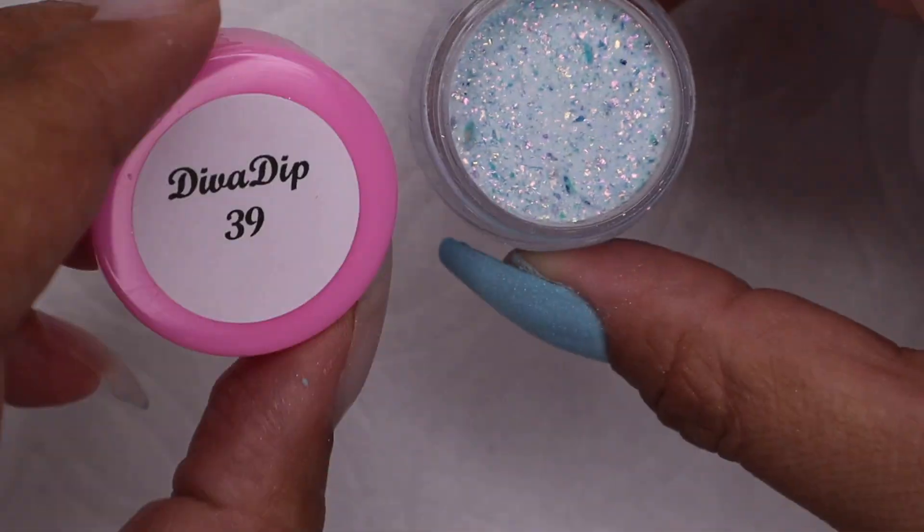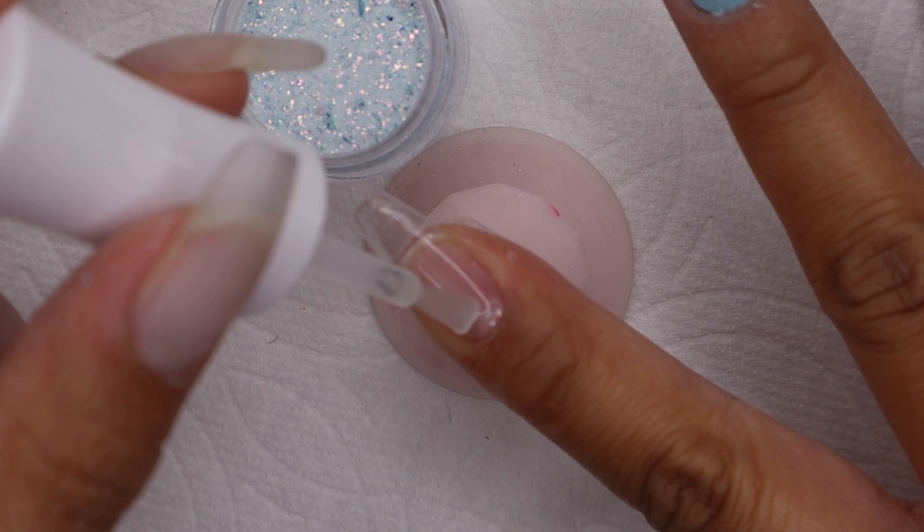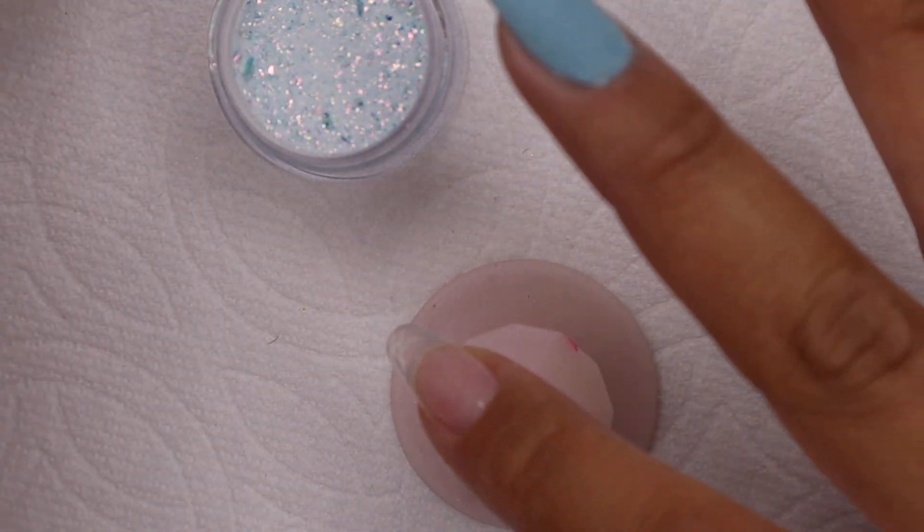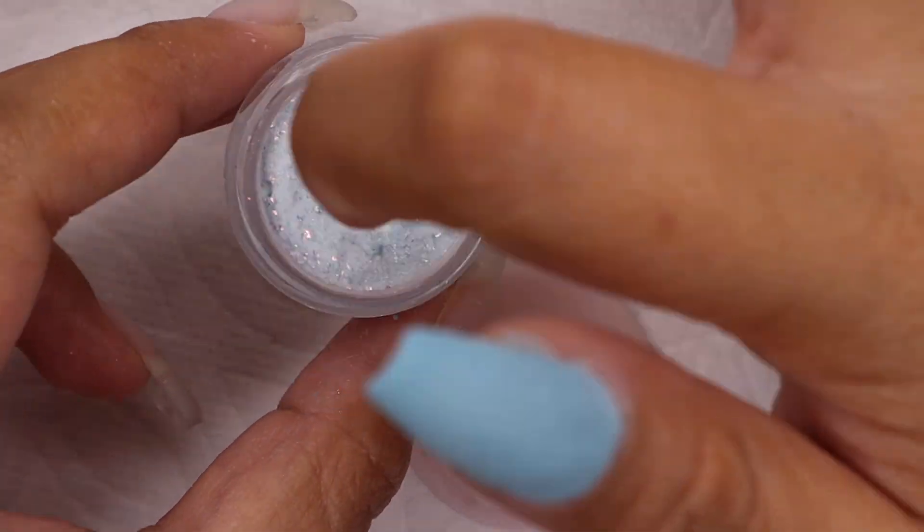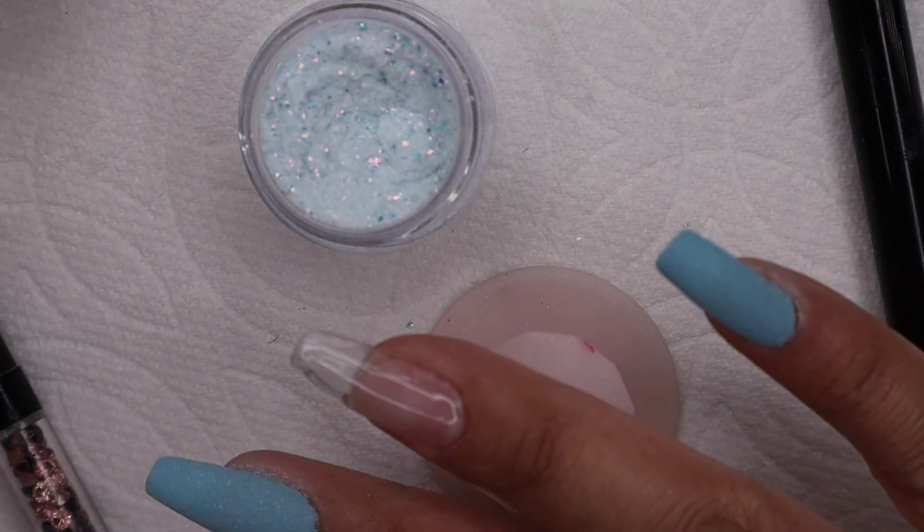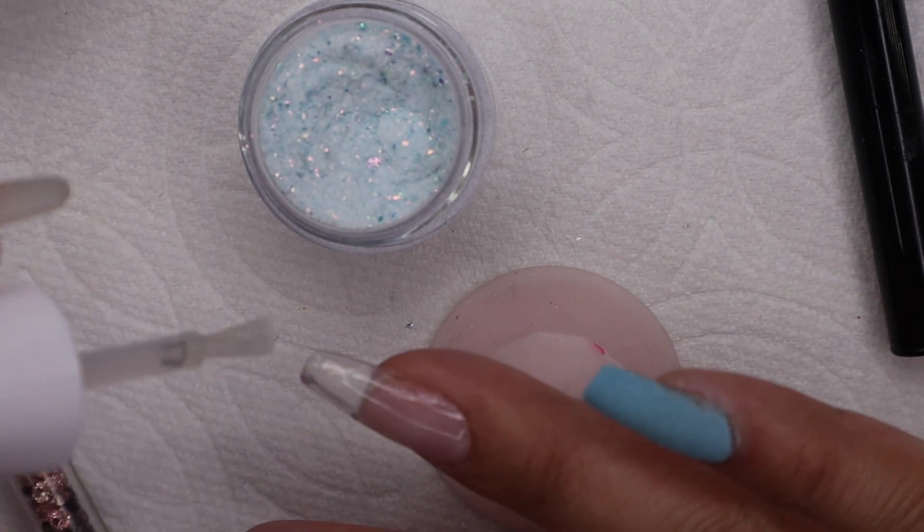Now I am going to apply the flakes. This is Diva Dip 39, and I really am in love with these flakes. It is really so nice and perfect for the winter. I'm going to apply this on my pointer and ring finger. For this color, since it's a bit sheer, I am going to apply three layers.